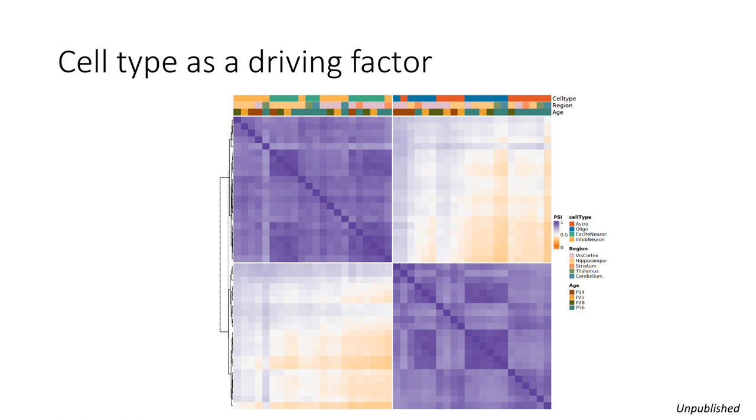However if you look at this annotation on top you'll find that while the blue and red which is glial cell types are on the right, the age and the region sort of gets a little bit chaotic and we want to find out what is leading to certain cell types being more similar to each other than not when it comes to their splicing profile.